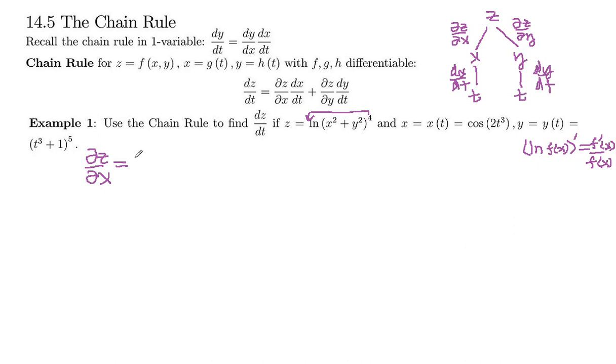So that's what we're going to do. We've got a 4 out in front. The inside function is x² + y², that goes on the bottom. And then its x derivative goes on the top. So derivative of x² is 2x, and the derivative of y² is 0. So there's our first derivative, and we can simplify that as 8x/(x² + y²).